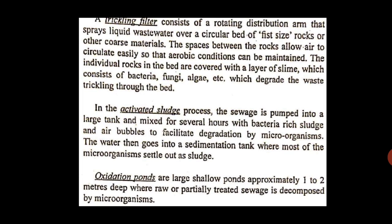A trickling filter consists of a rotating drum with a distributing arm that sprays liquid waste water over a circular bed of fist-sized rocks or coarse material. The spaces between the rocks allow air to circulate so aerobic conditions are maintained. The rocks are covered with a layer of slime consisting of bacteria, fungi, and algae, which degrade the waste trickling through the bed.